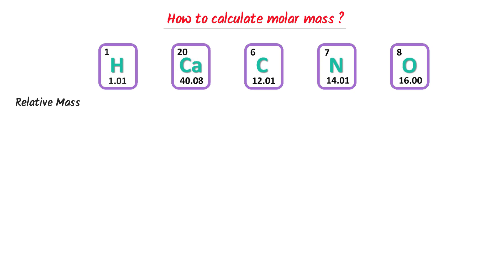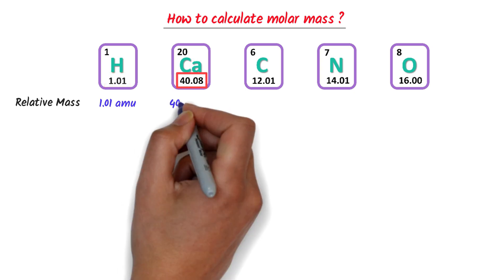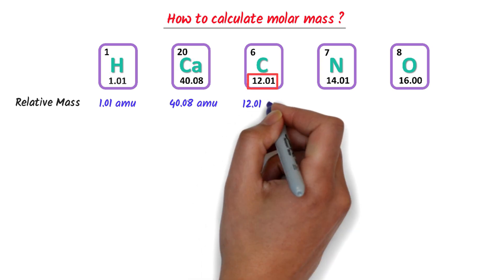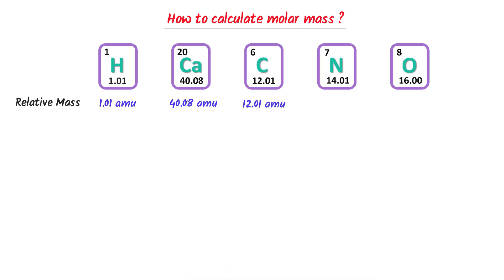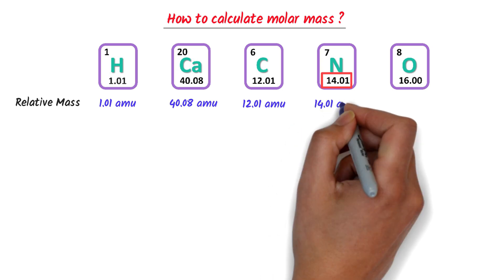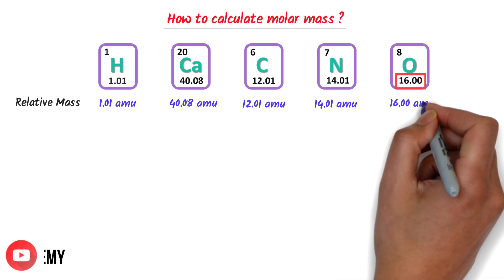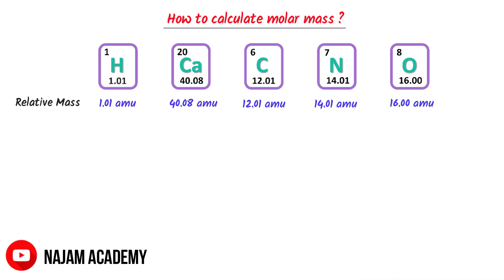For example, the relative atomic mass of hydrogen is 1.01 amu. The relative atomic mass of calcium is 40.08 amu. The relative atomic mass of carbon is 12.01 amu. The relative atomic mass of nitrogen is 14.01 amu, and the relative atomic mass of oxygen is 16.00 amu.